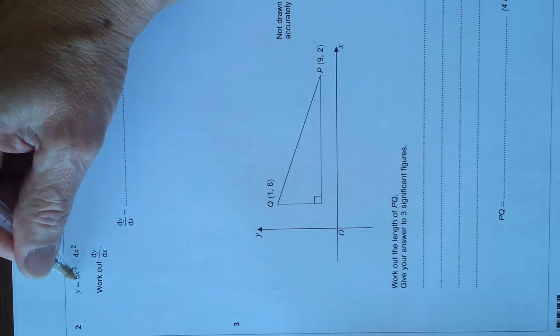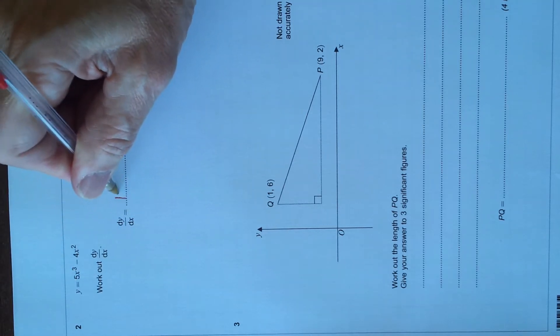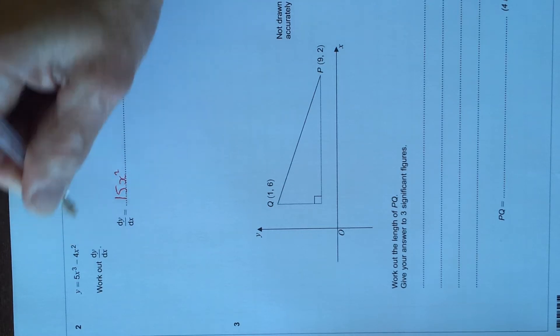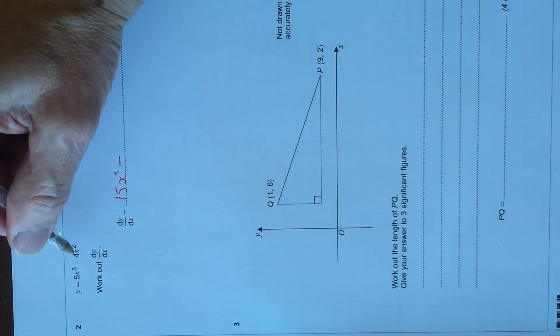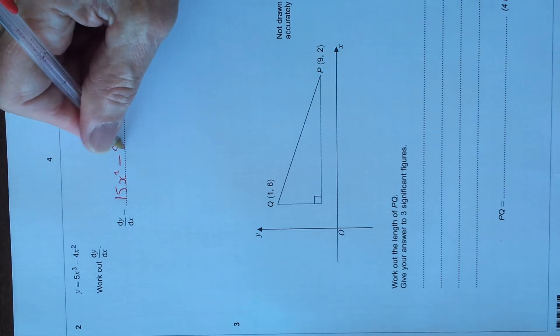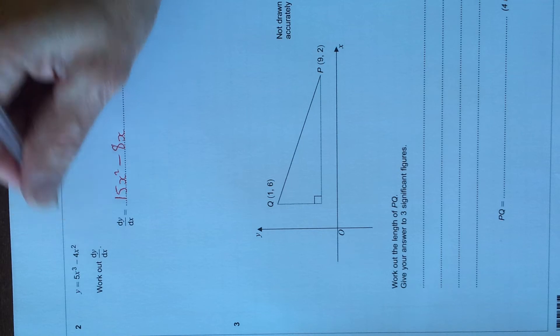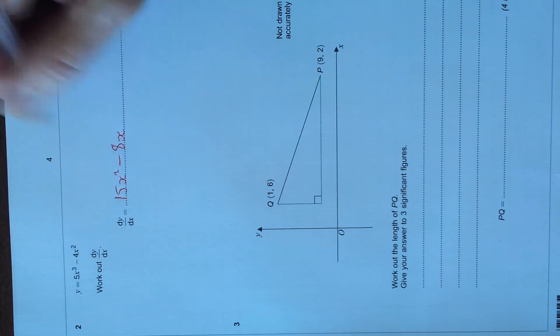So 3 times 5 is 15, and the x cubed goes to x squared. That's a minus, so this is a minus. 2 times 4 is 8, x to the power of 1, because 2 reduces to 1, I'll just leave it as x.